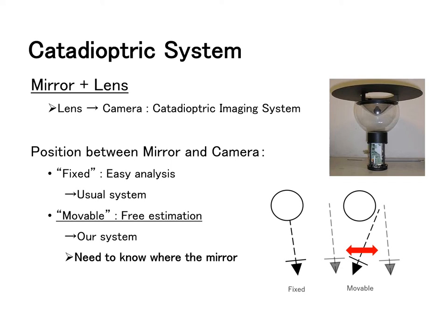However, my system uses movable system because movable system makes estimation free. I focus on being able to shot from a variety of perspectives. In used movable system, I have a problem with where the mirror is. So estimating the position of the mirror will be necessary before 3D estimation.